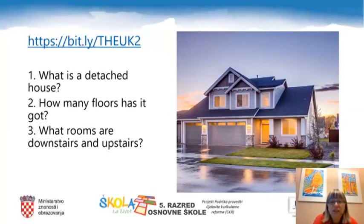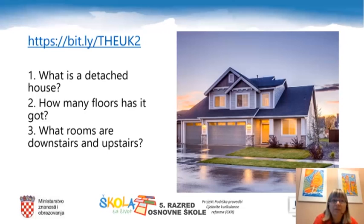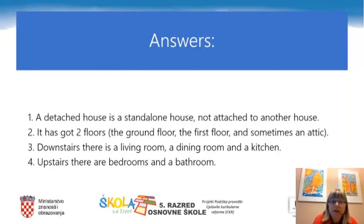The questions for the second video clip are: What is a detached house? How many floors has it got? What rooms are downstairs and upstairs? Please copy the link bit.ly/the-UK2 into your browser and watch the second video clip. The answers are: A detached house is a standalone house, not attached to another house. It has got two floors — the ground floor and the first floor — and sometimes an attic. Downstairs there's a living room, a dining room, and a kitchen. Upstairs there are bedrooms and a bathroom.